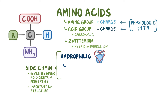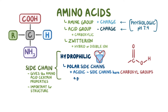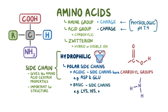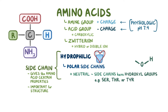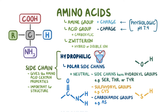Hydrophilic amino acids have polar side chains. These polar side chains might be acidic, like when their side chains contain additional carboxyl groups, as in aspartic acid and glutamic acid. Other hydrophilic amino acids have polar side chains that are basic, like lysine, histidine, and arginine. At physiological pH, the acidic groups lose a hydrogen and the basic groups gain a hydrogen. Finally, some polar side chains are neutral—for example, they can contain hydroxyl groups like serine, threonine, or tyrosine; sulfhydryl groups like cysteine; or carboxamide groups like asparagine or glutamine.